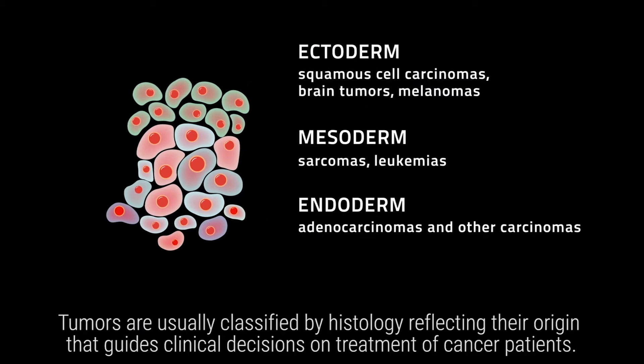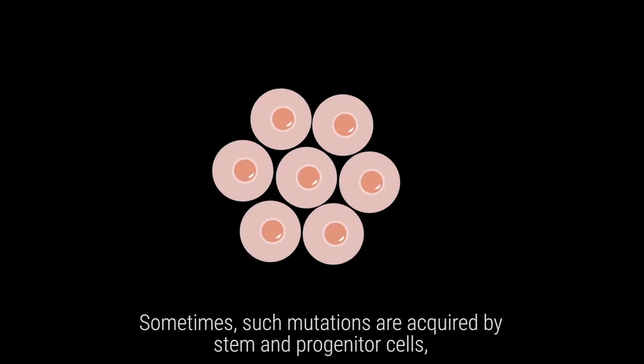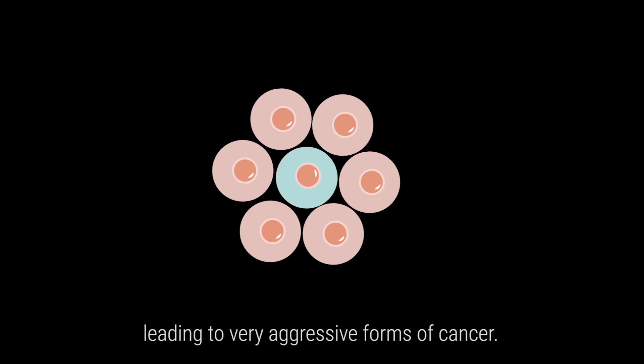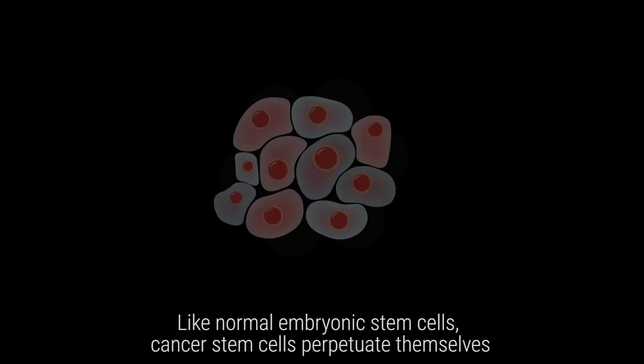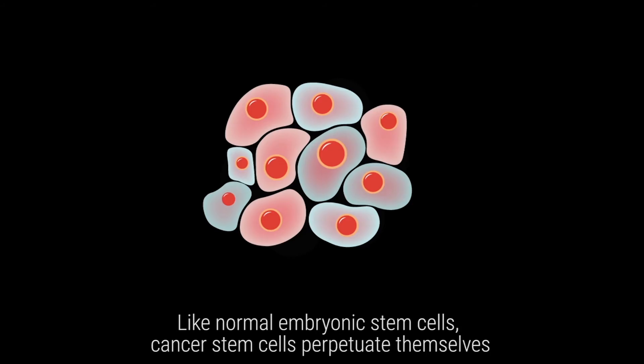When differentiated cancer cells acquire mutations, they may de-differentiate in a process called oncogenic de-differentiation. Tumors are usually classified by histology reflecting their origin, which guides clinical decisions on treatment of cancer patients. Sometimes such mutations are acquired by stem and progenitor cells, leading to very aggressive forms of cancer.